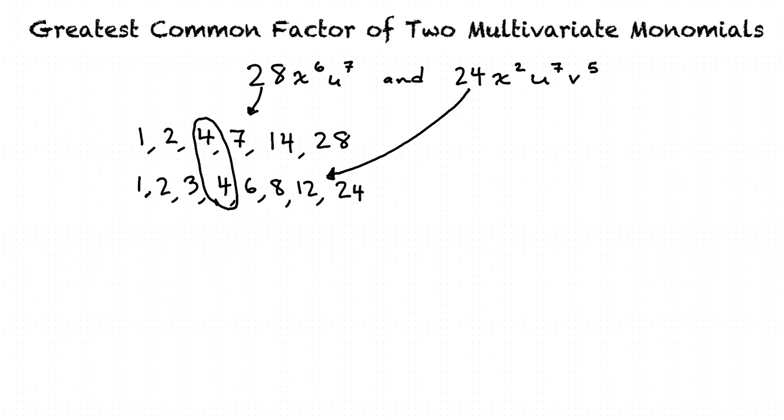So doing the same thing for the variable u, we see that there are seven u's on both expressions. So the GCF is u to the seventh.